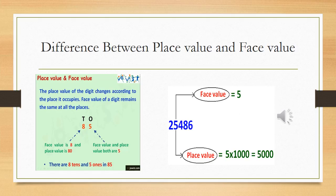The place value of a digit changes according to the place it occupies. The face value of a digit remains the same at all places. For example, take the number 85. 5 is the ones and 8 is the tens. In the case of 8, the face value is 8. But 8 represents the tens, which means it is 80. So the place value is 80. Similarly for 5 — the face value and place value of 5 are both 5.